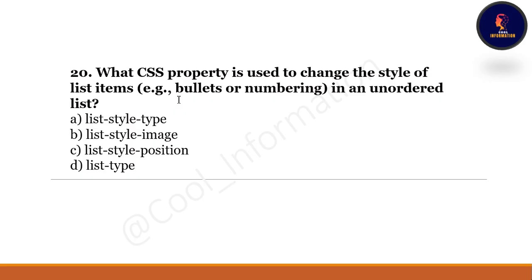Question 20, the last question: What CSS property is used to change the style of list items — bullet or numbering — in an unordered list? Option A: list-style-type. Option B: list-style-image. Option C: list-style-position. Option D: list-type. The correct option is option A, which is list-style-type.